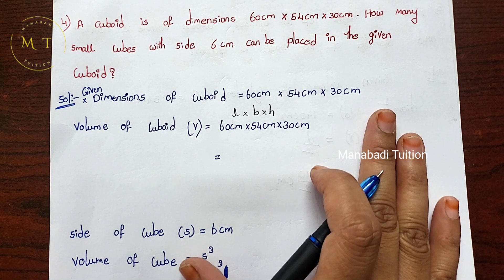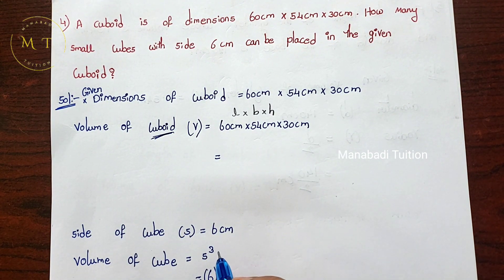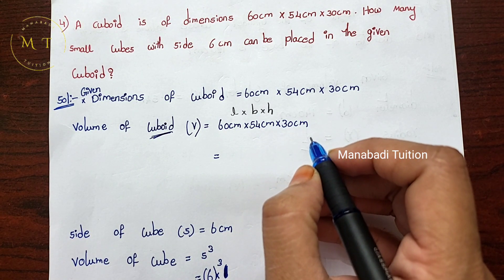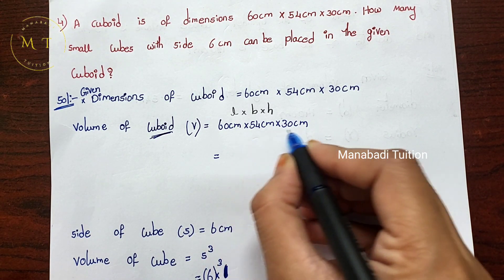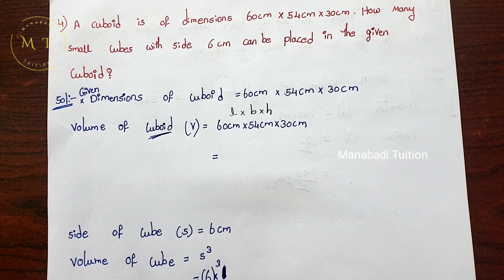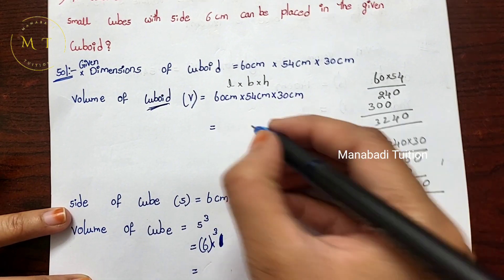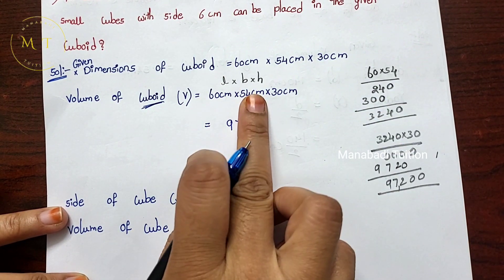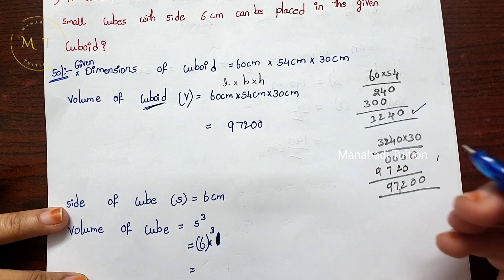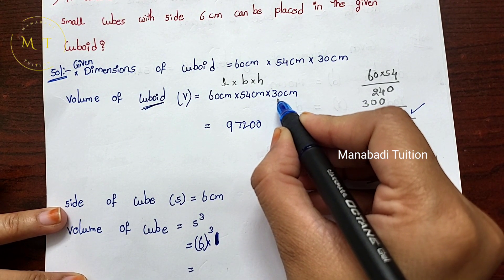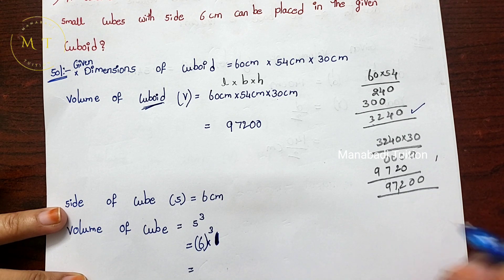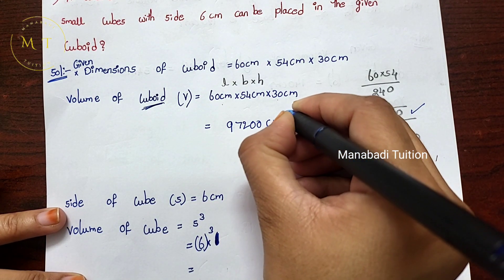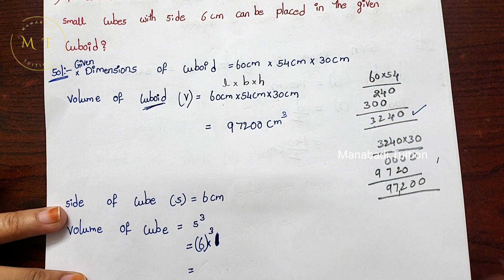First, we find the volume of the cuboid by multiplying length × breadth × height. The total volume of the cuboid is 97,200 cubic cm. Next, we find the volume of the small cube: side is 6 cm, so we multiply 6 × 6 × 6 to get 216 cubic cm.